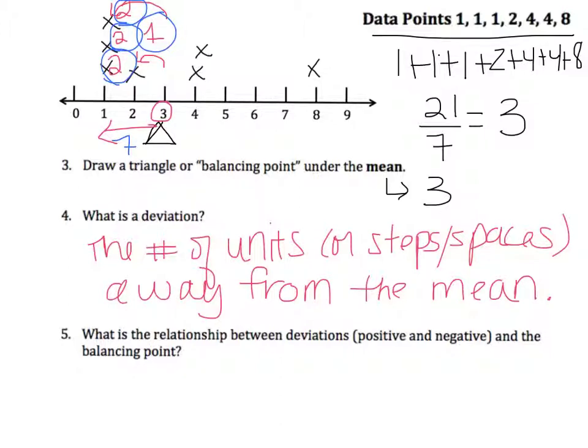We can do the same thing moving from the mean to the right, or the positive side of the balancing point. I have one step, and another one step, two deviations already. Then I'm going from the mean all the way out to data point eight, and that would be one, two, three, four, five steps away. So in total, I have one, two, plus five is seven.